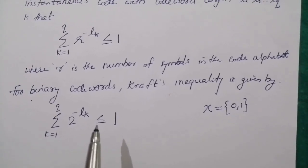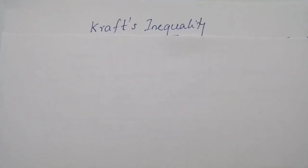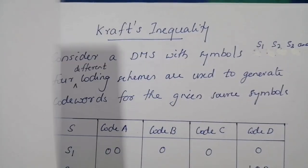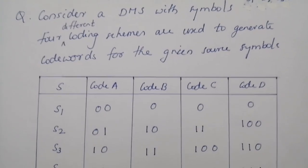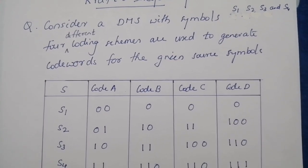In order to illustrate the importance of Kraft's inequality, we will consider an example. Consider a discrete memoryless source with the symbols S1, S2, S3, and S4.